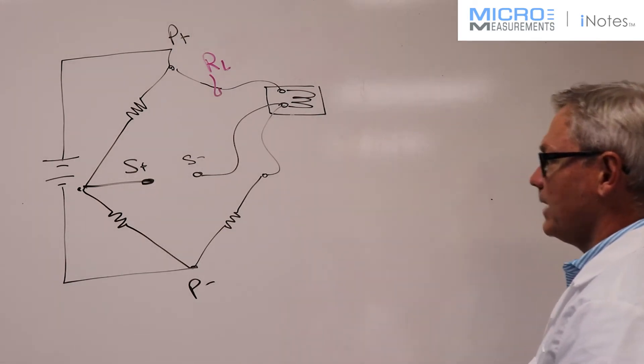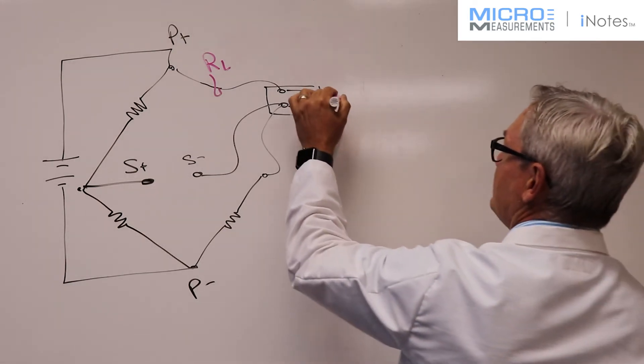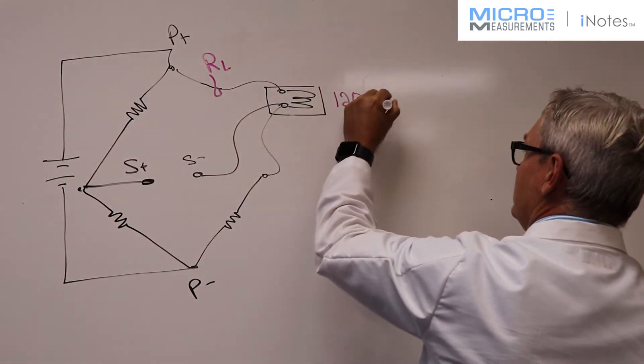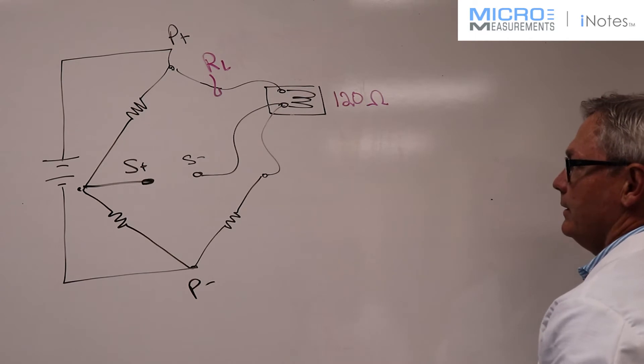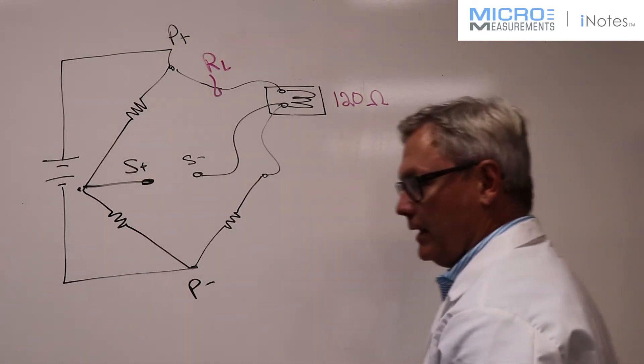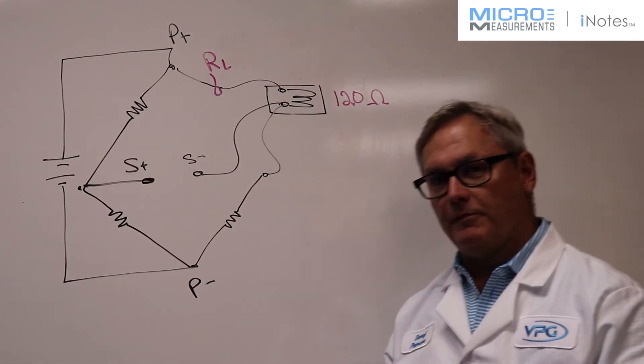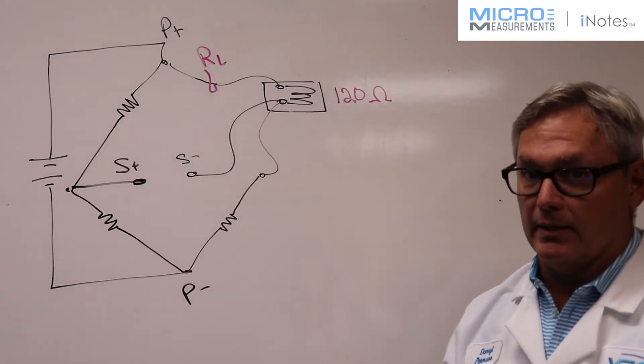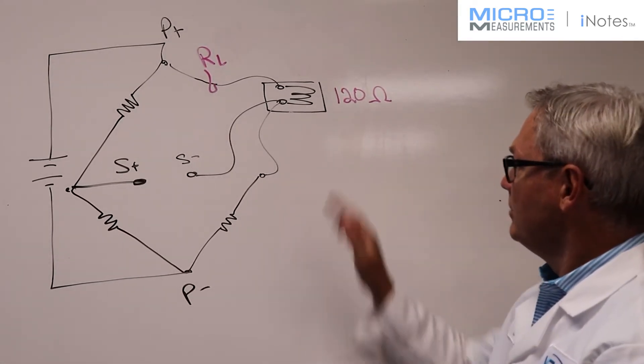So I'm going to assume a couple of things. First off, I'm going to assume that the strain gauge is 120 ohms. We typically offer strain gauges that are 120, 350, 1000 ohms, and in some cases even much higher than that, depending on the application. But for now, we're going to assume it's 120 ohms.